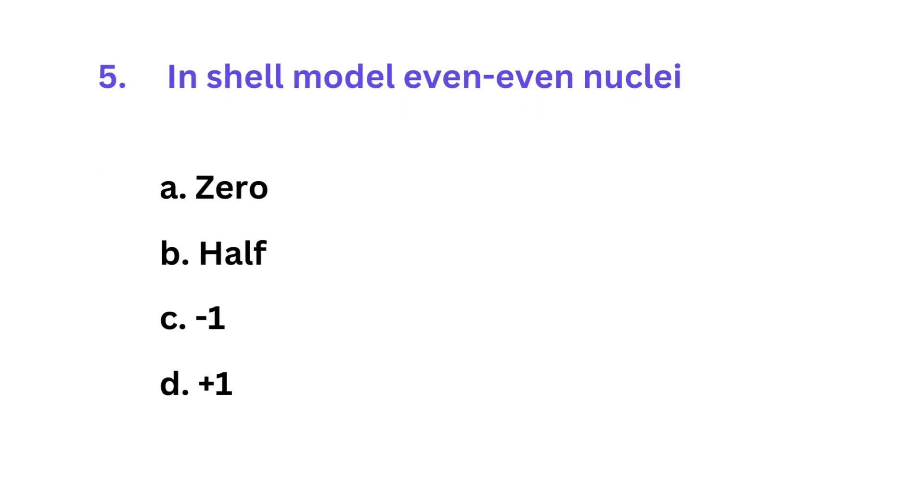In shell model even-even nuclei, which one of the following is correct? A. Zero, B. Half, C. Minus 1, D. Plus 1